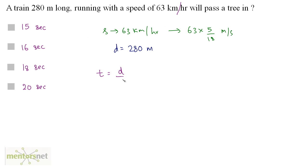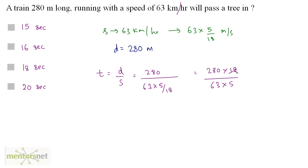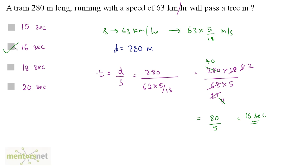Time equals distance upon speed. The distance is 280 meters upon the speed 63 times 5 by 18, which gives 280 times 18 by 63 times 5. Since 3 times 6 is 18 and 3 times 21 is 63, and 7 times 40 is 280, we get 40 times 2 is 80 divided by 5, which equals 16 seconds. The answer is option B, 16 seconds.